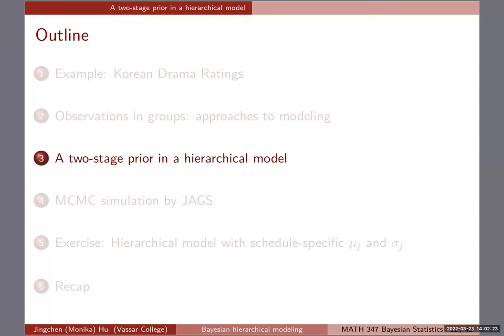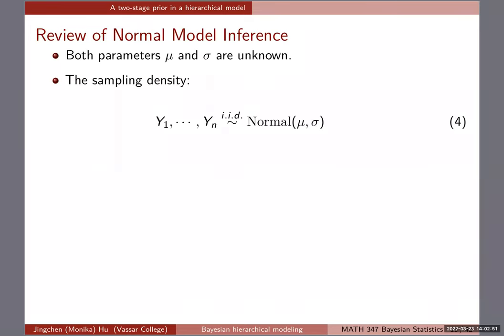We're going to the third topic, and we'll still do a prior and everything. The sampling model, likelihood, and all of that is overall straightforward. The key in doing hierarchical modeling is how to set up the priors — specifically, when we're doing hierarchical modeling, we're going to have a multi-stage prior. In our example, I'm going to do a two-stage prior.